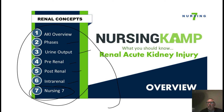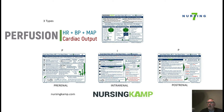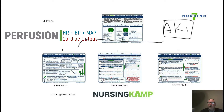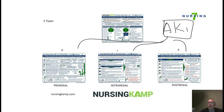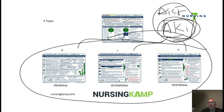When we're talking about acute kidney injury, we're really talking about perfusion. There are basically three different types: pre-renal, intra-renal, and post-renal. Whenever we see acute kidney injury or acute kidney failure, we ask what kind — and it can be any one of these three things.